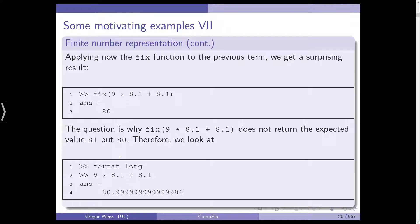But what happens if we now write format long to get more decimal places? We can see that the answer of 9 times 8.1 plus 8.1 is actually 80.999999 and so on 86.